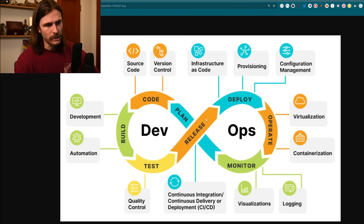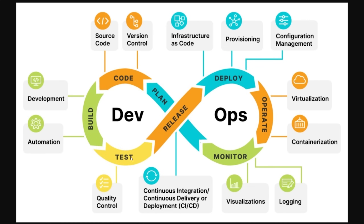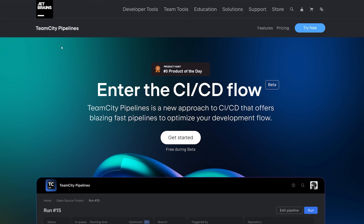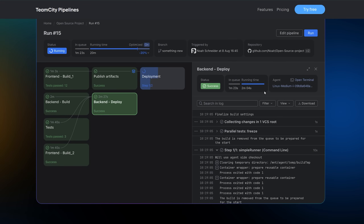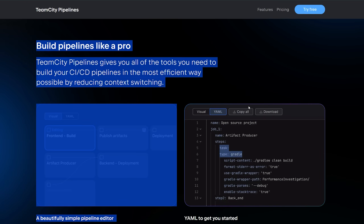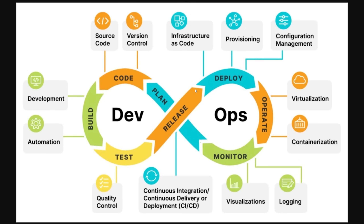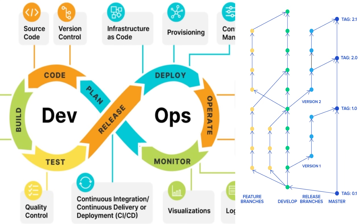After testing we go to release, but it's difficult to talk about anything from build through test, release, and deploy without talking about continuous integration and continuous deployment. That's where the sponsor TeamCity Pipelines comes in — they have a new approach to CI/CD that offers blazing fast pipelines to optimize your development flow, and it's very pretty. Let me show you how it works within our DevOps CI/CD. The pipeline is used for the dev team, QA, release, and deployment. Think of your Git flow: feature branch → development branch → testing branch → release branch → master/production branch.